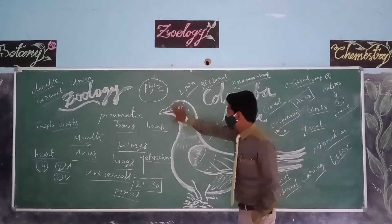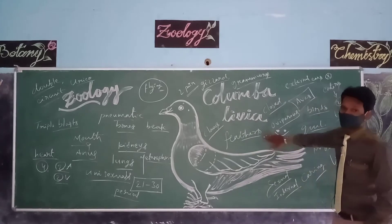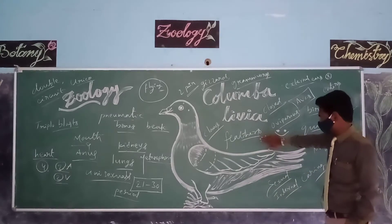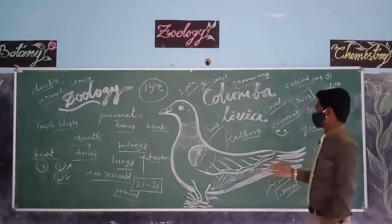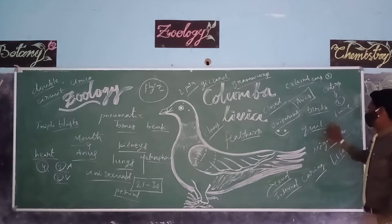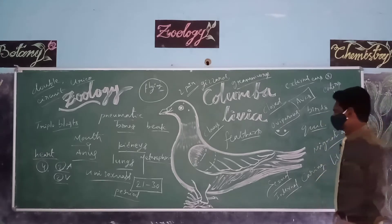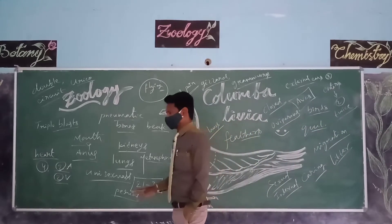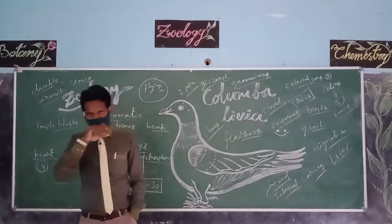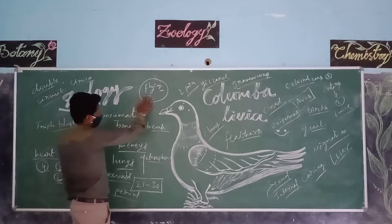The entire bird body is covered by special exoskeleton structures called feathers. These feathers are around 7 or 8 types. Among all feathers, quill feathers have unique value and characteristic features, which we will discuss in another class. The major function of feathers is giving protection to the body of the bird and also helping in the flying process.